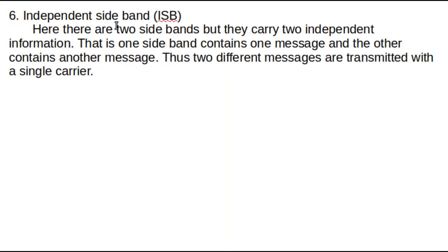The last type is Independent Sideband or ISB. As in AM, two sidebands are transmitted, but the difference is that in AM both sidebands carry the same information. In ISB, the two sidebands carry two different messages — the lower sideband carries one message and the upper sideband carries a totally different message. So when we transmit the two sidebands we are actually transmitting two independent pieces of information.